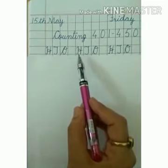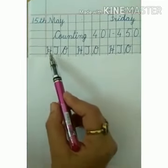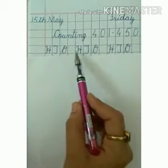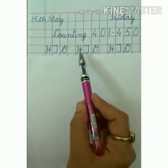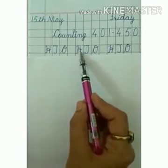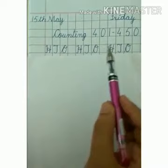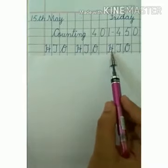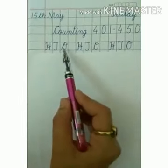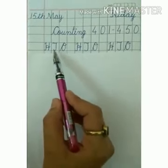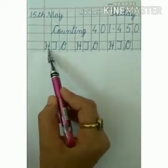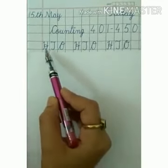Again leave one line and write down H-T-O. Leave one block, again write H-T-O. Again leave one block and write H-T-O. O stands for 1's, T stands for 10's, and H stands for 100's.